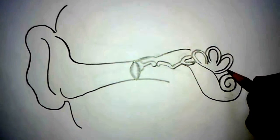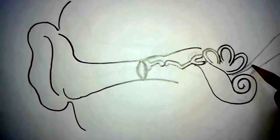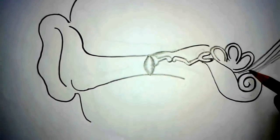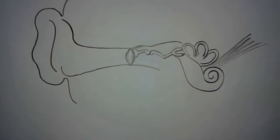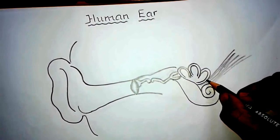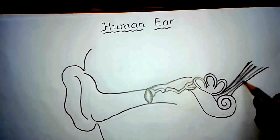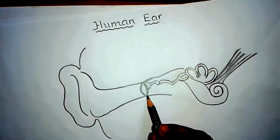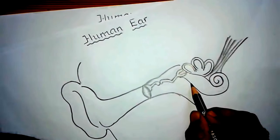Now from here draw the auditory nerve. The cochlea contains receptors which join together to form the auditory nerve. To maintain the air pressure on either side of the tympanum there is a tube called the Eustachian tube, so draw the Eustachian tube.